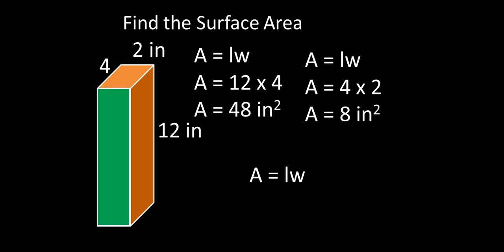And our final rectangle is right here on the front. It's the same as the one on the back. And the length of that is twelve and the width is two. So when we multiply those we'll get twenty-four square inches. So those are the three rectangles that we have to find. The front and back, the sides, and also the top and bottom.